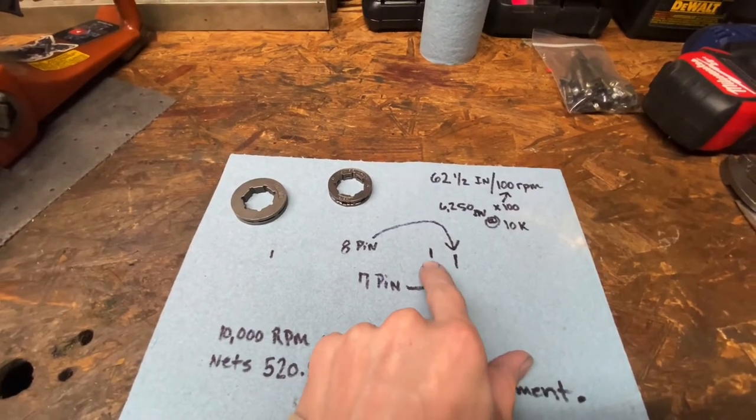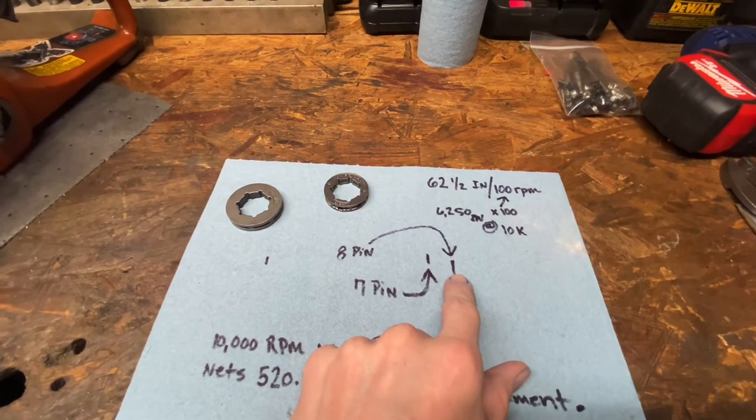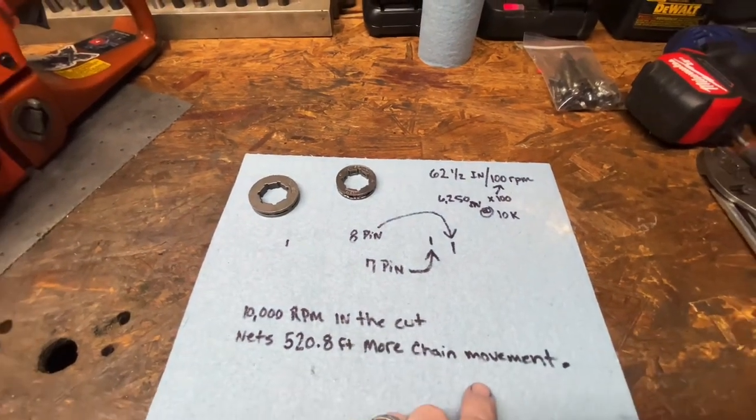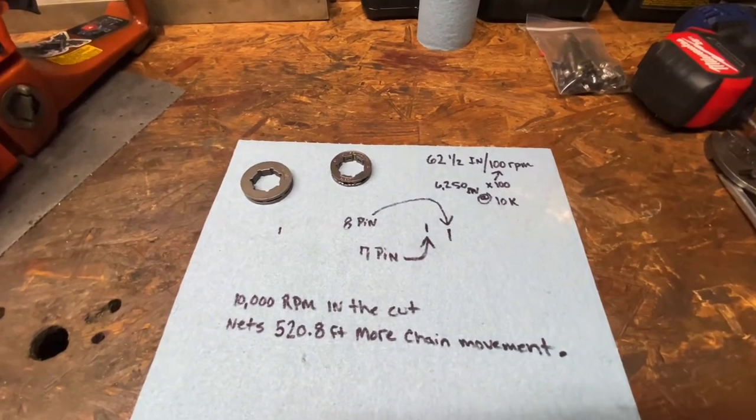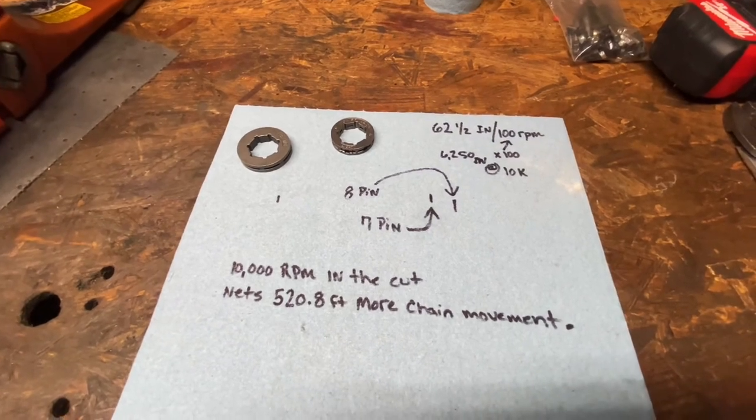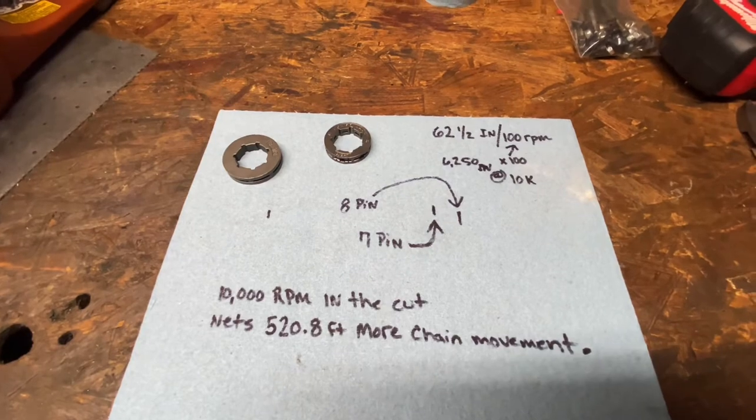It doesn't look like it does a whole lot in one revolution, but when that thing's spinning up 10, 11, 12, some of these saws get 14,000 RPMs in the cut, that 8-pin's gonna move that dude a whole lot more.